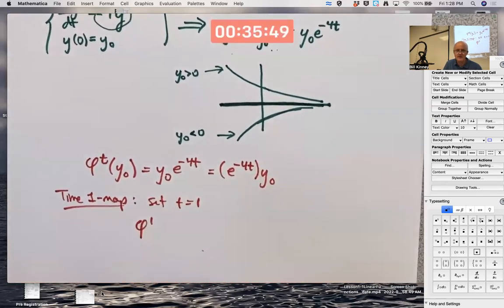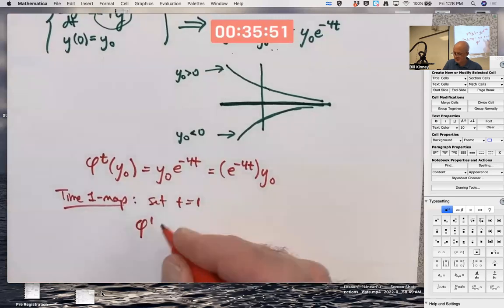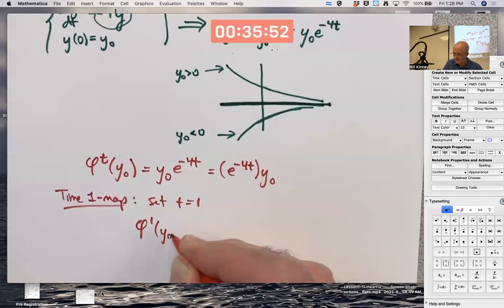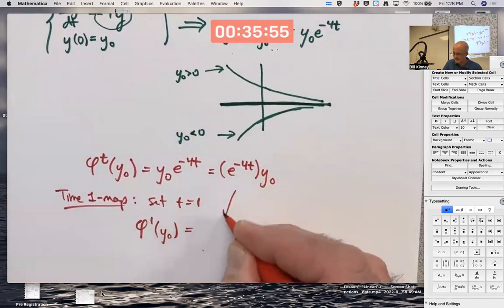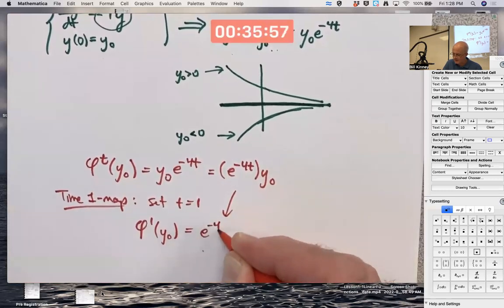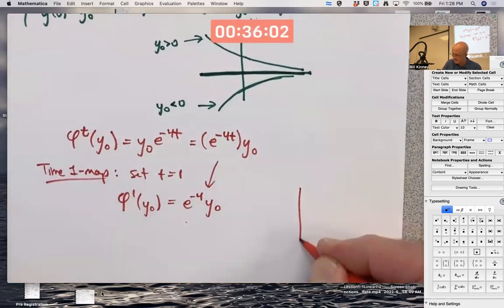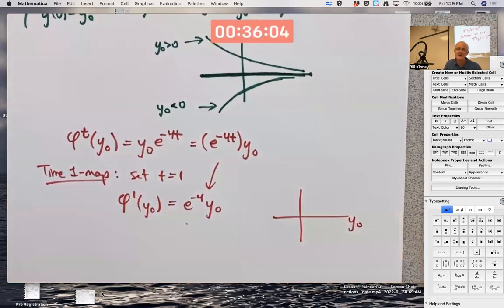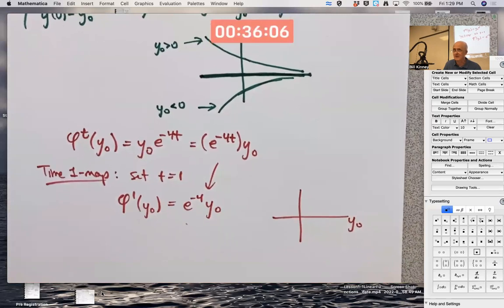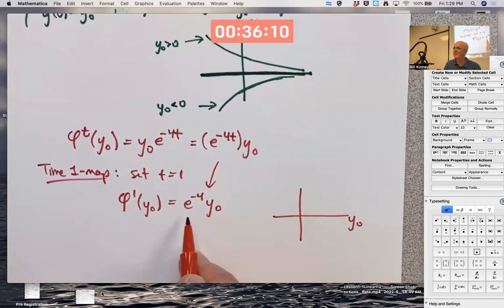And the function becomes phi superscript 1 of y_0 equals, well, in this case, it's e to the negative 4 times y_0. That is a linear function of y_0. You could graph it as a function of y_0 if you wanted to. It's not so clearly necessarily useful. That e to the negative 4 would be its slope.